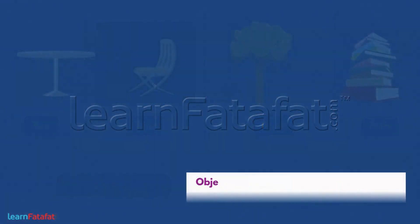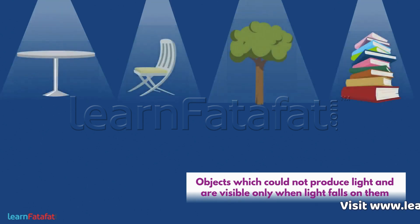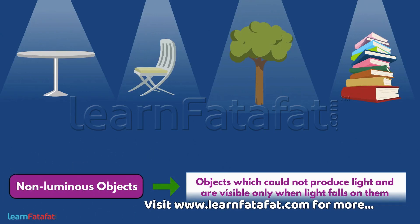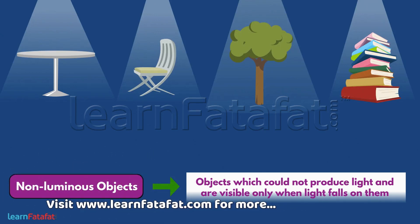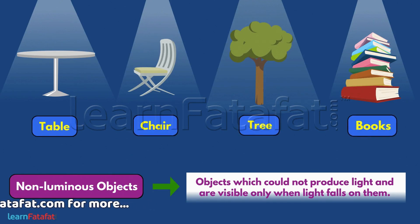There are other objects which could not produce light and are visible only when light falls on them. Such objects are called non-luminous objects. Table, chair, tree, and books are all non-luminous objects.